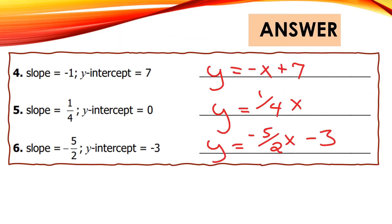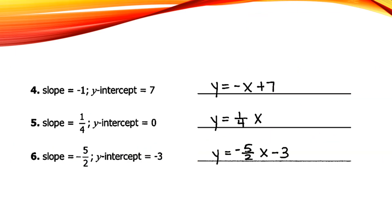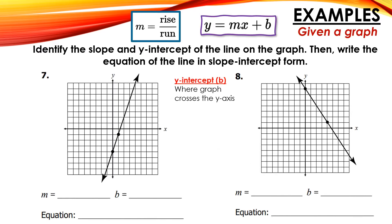All right, I have the answers right here. Go ahead and pause the video to check your answers, and I hope you get them correct. Now we have two examples where we want to write an equation in slope-intercept form from graphs. The first thing we want to do is identify the slope. If you're not familiar with how to find slope on a graph, please see my video on finding slope on a graph — I will link it in the description.